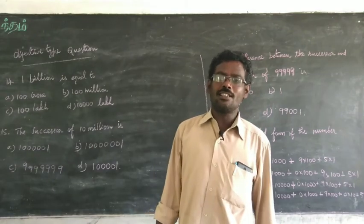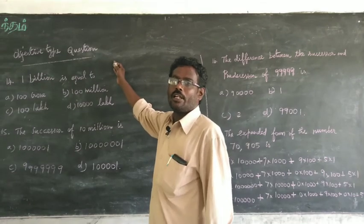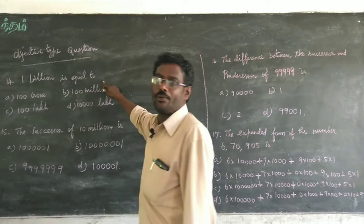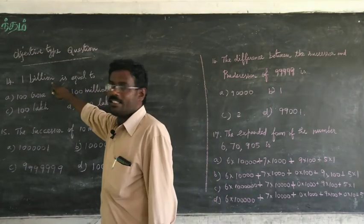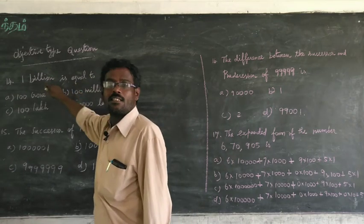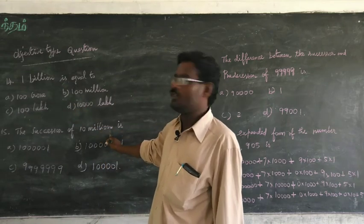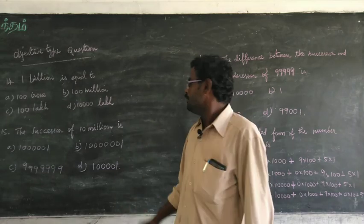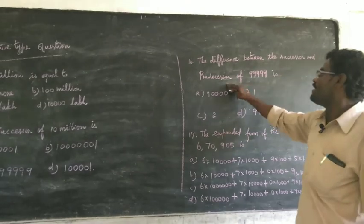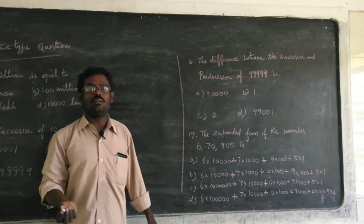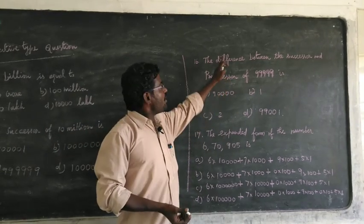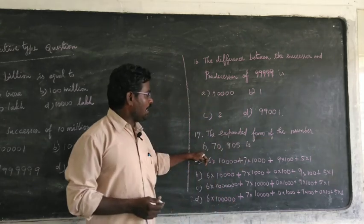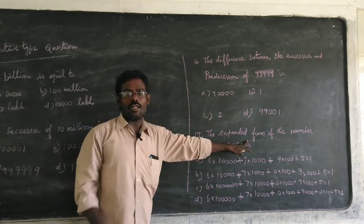Okay students, have you all understood the sums? Today's assignment is objective type questions. Understand the Indian and international system. First: one billion is equal to — write the international system and find the Indian system equivalent. Next question: the successor of ten million — successor means the next number. Next: the difference between the successor and the predecessor — successor means next number, predecessor means the number before. Difference means subtract. Next: write the expanded form of six lakh seventy thousand nine hundred and five. Finish the homework. See you in the next class.